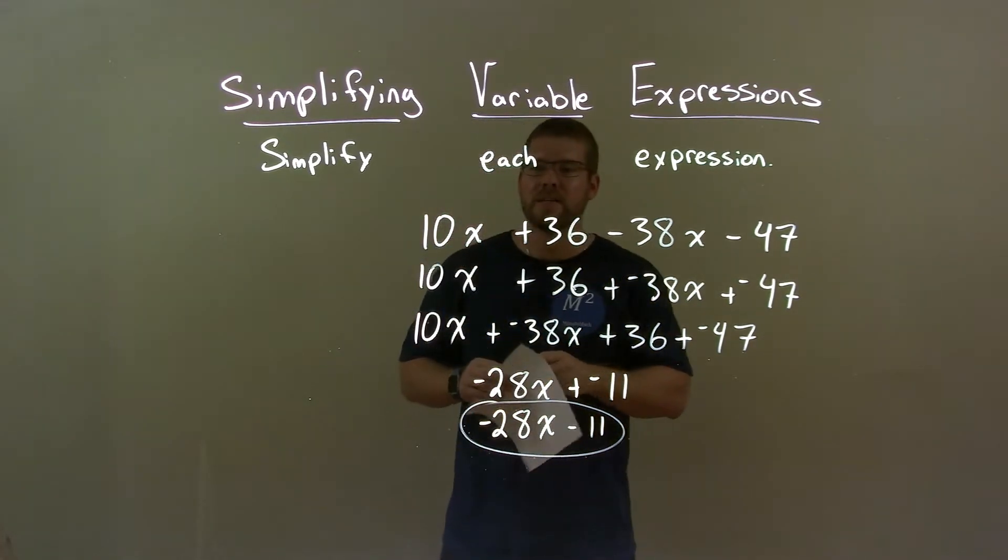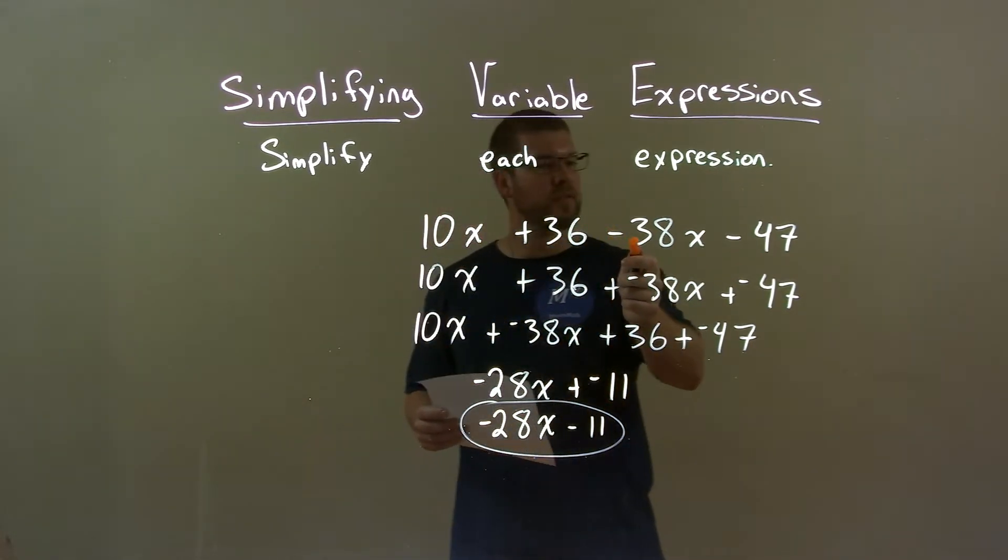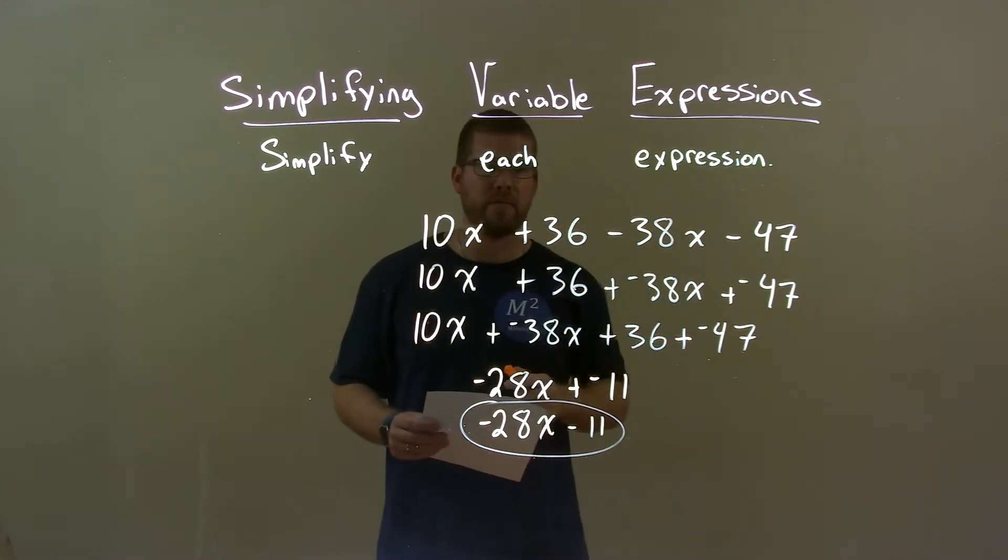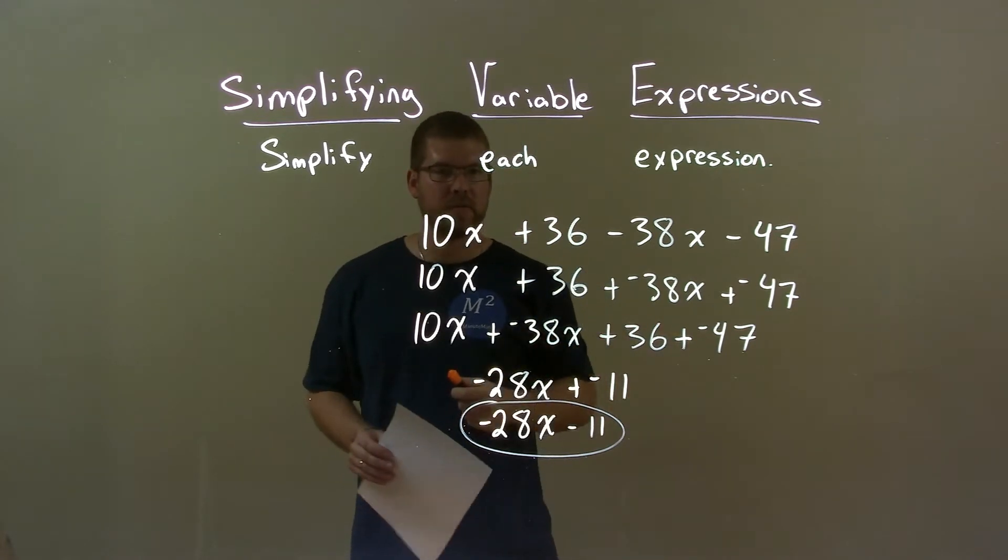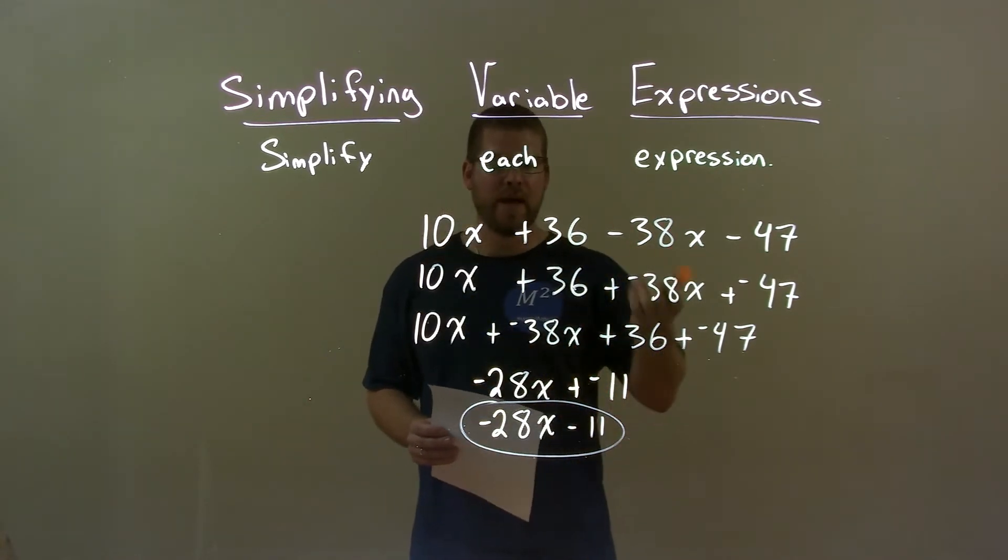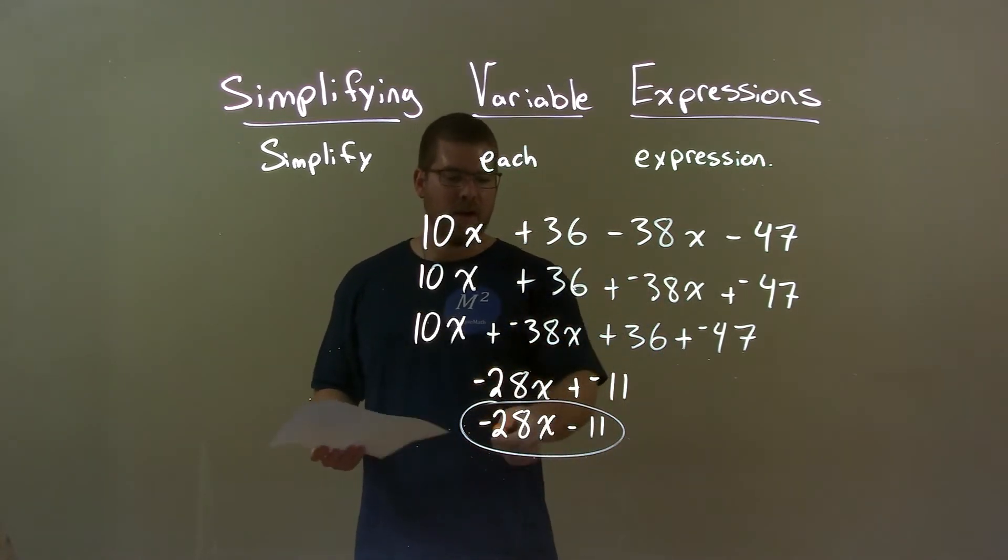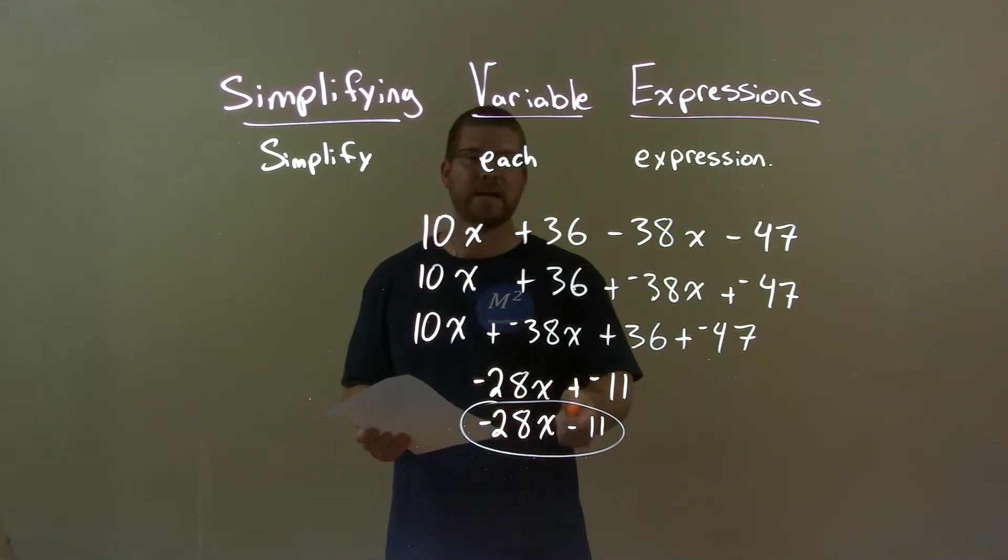So, quick recap. We're given 10x plus 36 minus 38x minus 47. My subtractions first became plus and negatives. Then, I rearranged to have my like terms next to each other. Then, I simplified and that gave me my final answer of negative 28x minus 11.